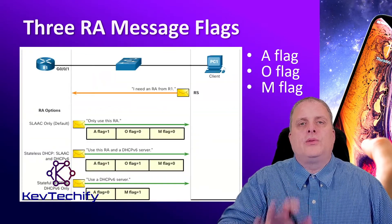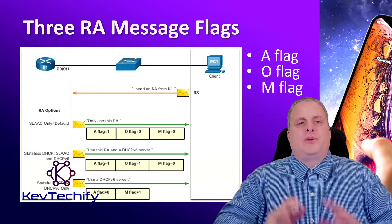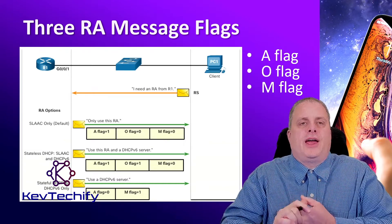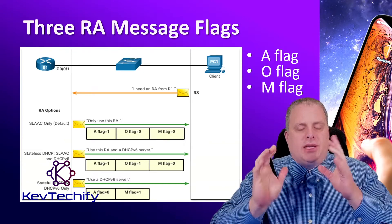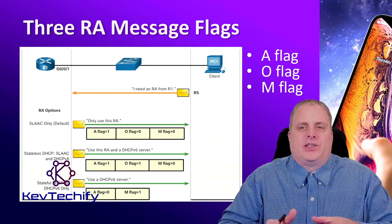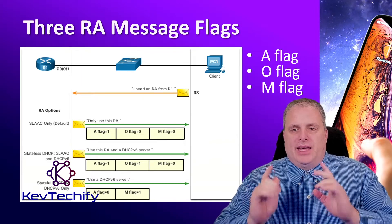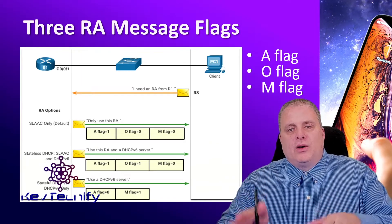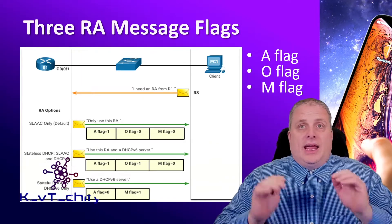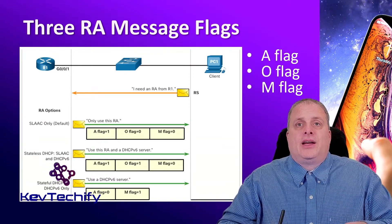In the router advertisement messages, there are three flags used to help set up our IPv6 address: the A flag, the O flag, and the M flag.